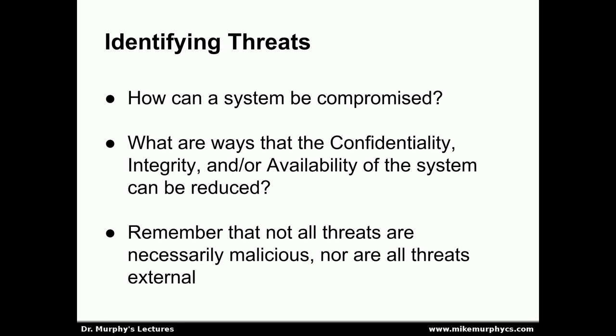In identifying a threat, we want to ask ourselves how a system could be compromised — what are ways that the confidentiality, integrity, and/or availability of the system could be reduced? Remember that not all threats are necessarily malicious, and not all threats are necessarily external. It's possible to have a malicious internal threat, such as a corrupt employee, or an accidental internal threat, such as a problem with a circuit breaker in the building. All kinds of different types of threats have to be considered.